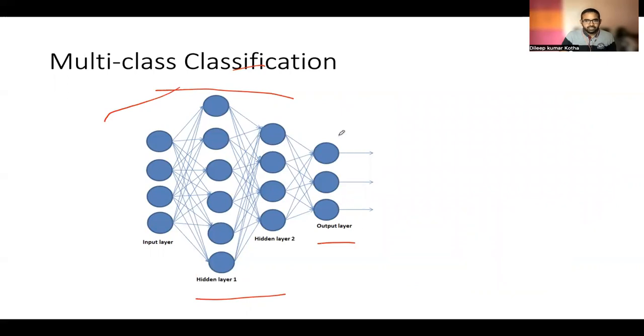In logistic regression, we have seen always the output hypothesis is a single one where we do one versus all classification to do multiclass classification. But in neural networks, we can have multiple hypotheses in the output layer.